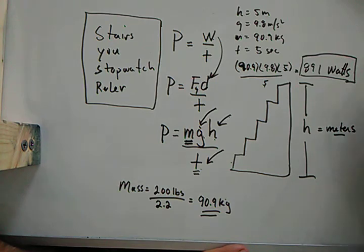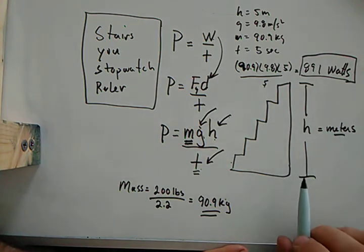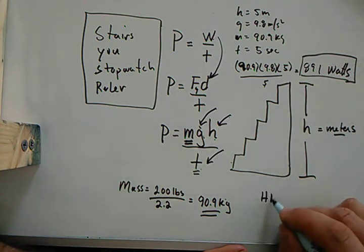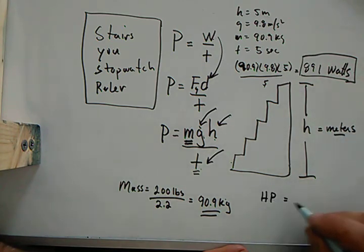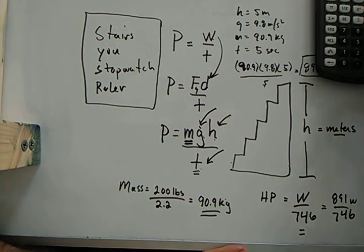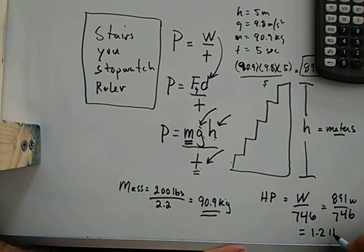So now the horsepower portion of this is very simple. Horsepower, HP, is equivalent to watts divided by 746. So 891 watts over 746 is equivalent to 746.